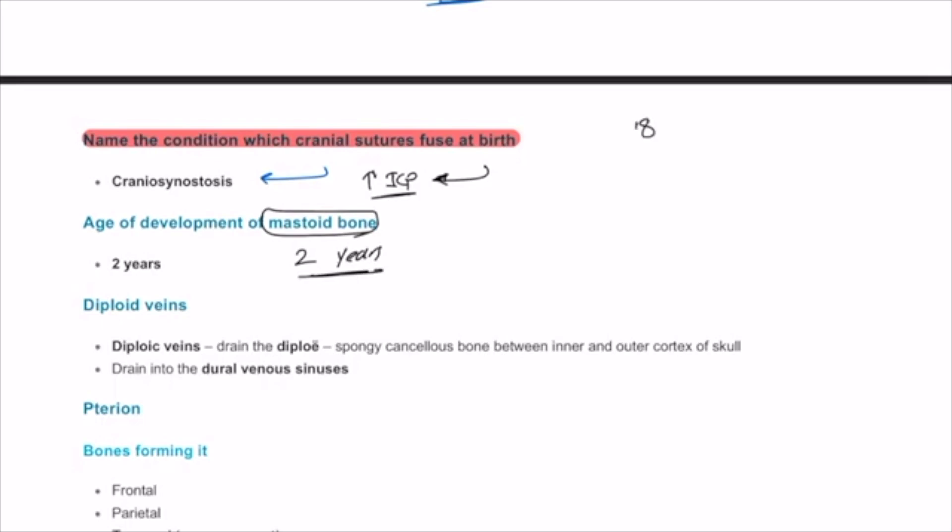If you remember, we mentioned 18 months and we mentioned two years as well. So 18 months is basically the fontanels or the sutures, and 24 is the anterior fontanel, and also the mastoid process will complete or will reach full development.